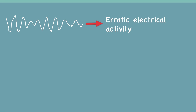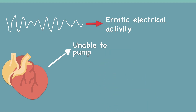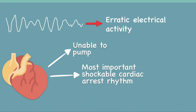This rapid and irregular electrical activity renders the ventricles unable to contract in a synchronized manner, resulting in immediate loss of cardiac output. Since the heart does not beat, blood is not circulated to the body or brain, and all bodily functions stop. Without a coordinated impulse to signal the ventricle to beat, sudden cardiac death occurs, which is why ventricular fibrillation is the most important shockable cardiac arrest rhythm.